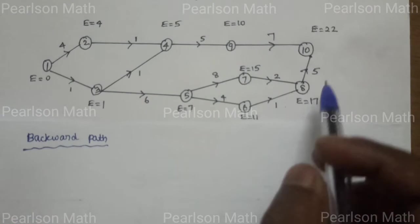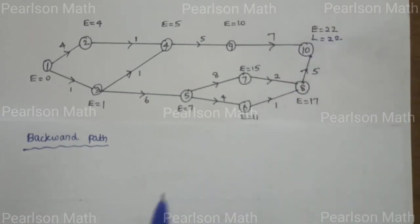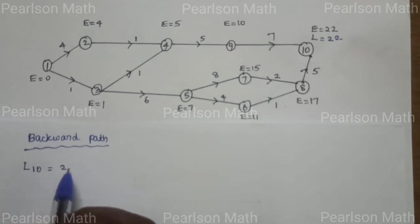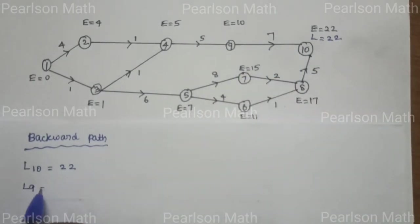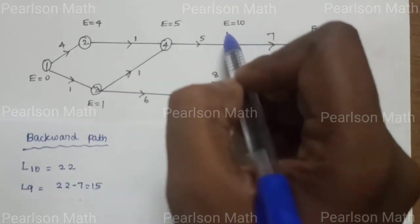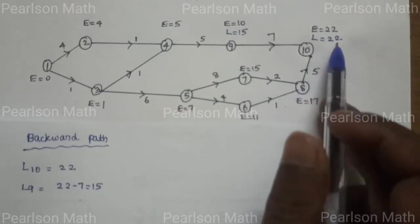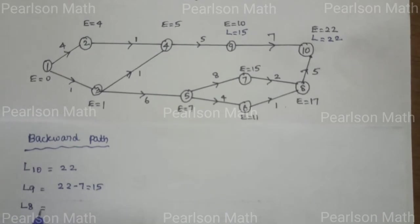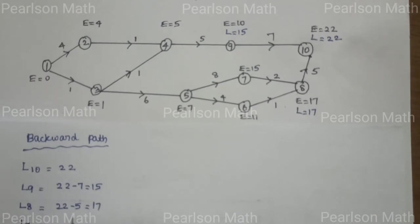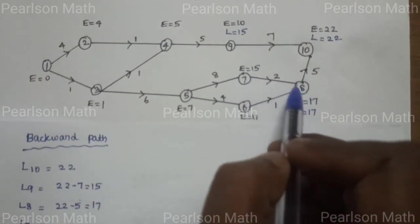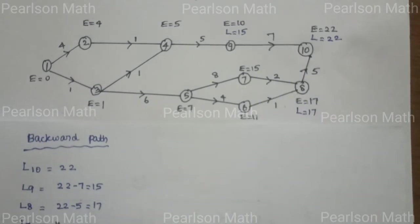Now the backward path. The last ending point is 22, so L10 is equal to 22. Going in reverse: L9 is equal to 22 minus 5 equal to 17. L8: path 8 to 10 gives 22 minus 5 equal to 17. L7: path 8 to 7 gives 17 minus 2 equal to 15.